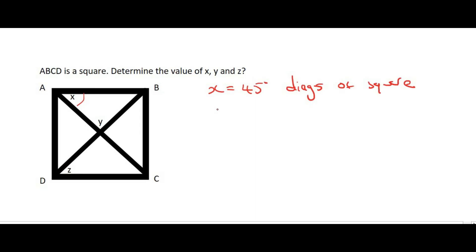So, then our reason will be diags of square. Then, to find y, remember when we looked at the beginning of this video, we said that all four of these angles in a square cut at 90 degrees. So, we can say that y is 90 degrees, and that will just be diags of square.